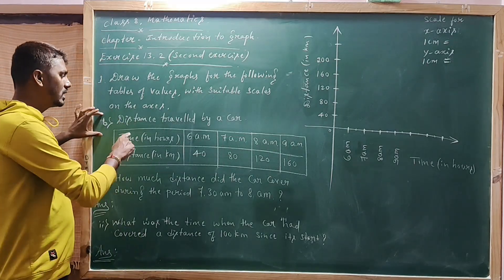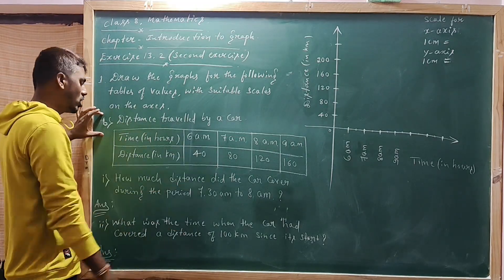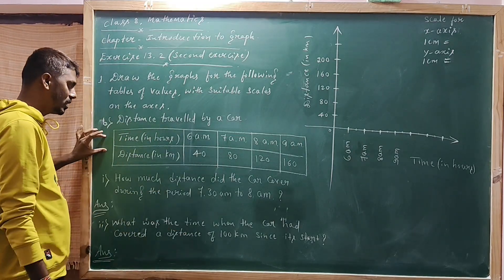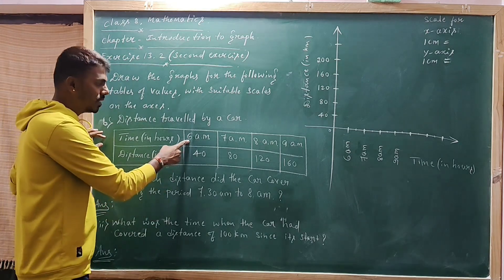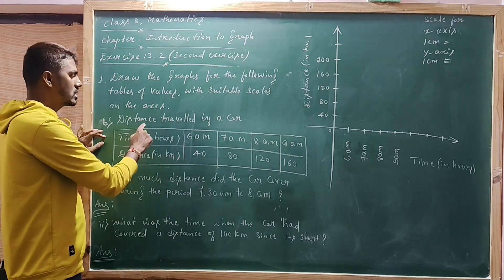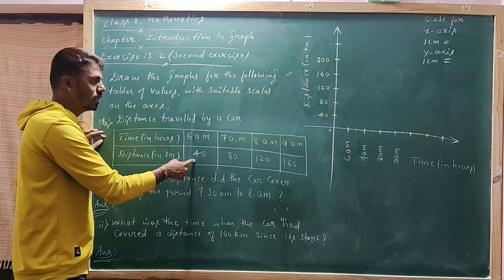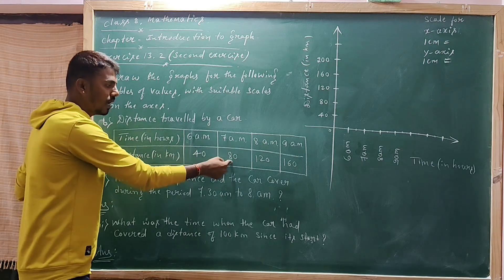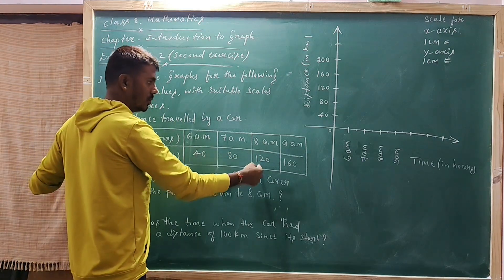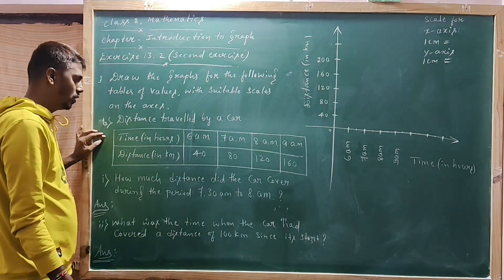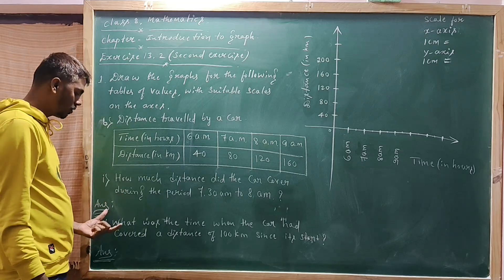Now the first question, second problem: distance traveled by a car. Observe the given table — time in hours and distance in kilometers. At 6 a.m. the car has covered 40 km; at 7 a.m. 80 km; at 8 a.m. 120 km; at 9 a.m. 160 km.